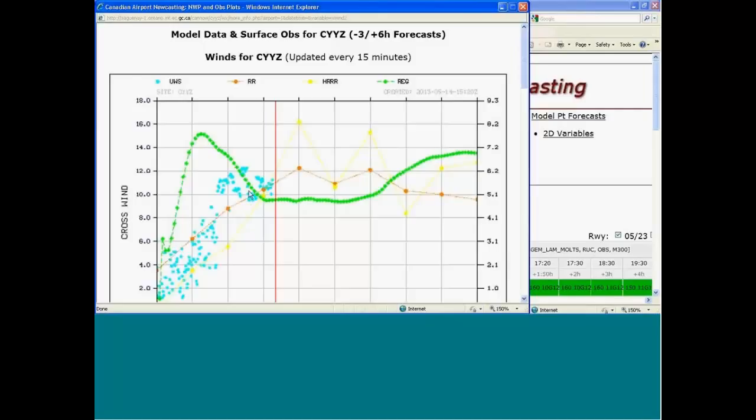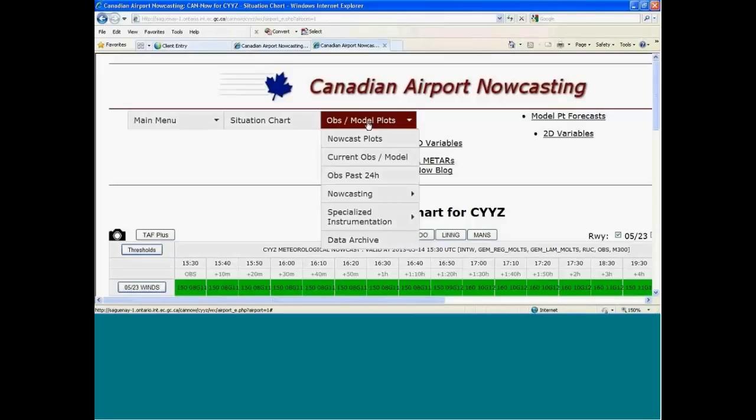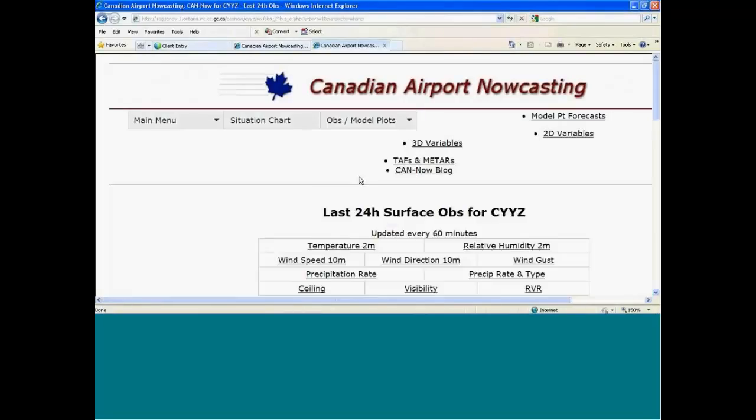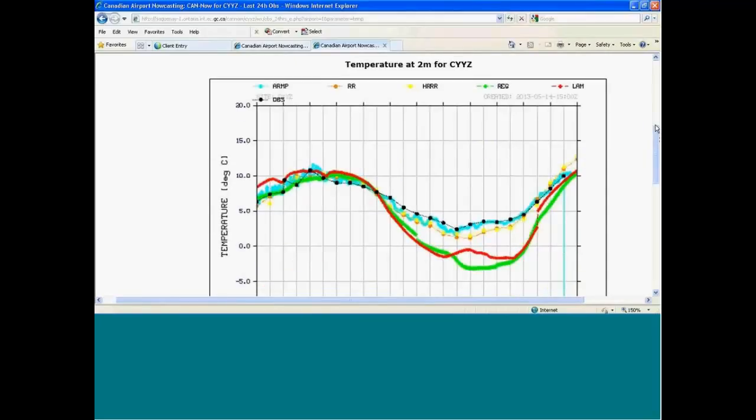And you get an idea of how well the models were doing in the past. This just shows you the temperature with all of the models. Here we have the Canadian high-resolution model, two and a half kilometers, the regional model, which is 10 kilometers, the rapid refresh, which I believe is three kilometers, and the high-resolution rapid refresh and the rapid refresh. And then the observations from the observer are in black, and then the sensor is in blue. So that gives you an idea. I'm going to get off of this because it's too cumbersome.